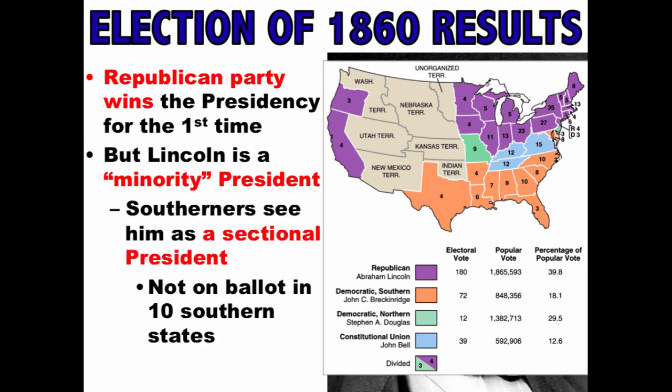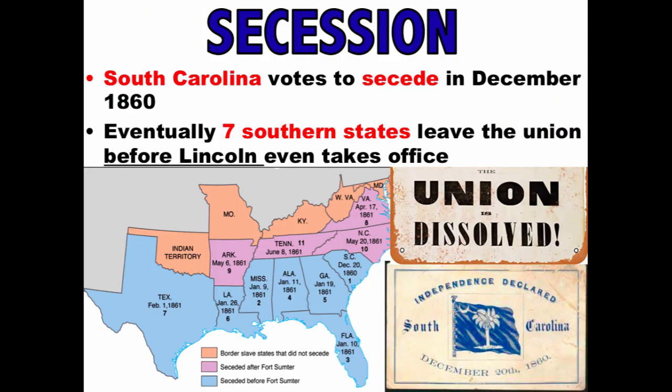Southerners saw Lincoln as a sectional president — he was not even on the ballot in 10 Southern states. As a result of Lincoln's election, secession followed. South Carolina was the first, voting to secede in December of 1860, and eventually seven Southern states left the Union before Lincoln even took office. It is very important to note that Lincoln and the Republican Party did not run on an abolitionist platform. Their platform merely stated no extension of slavery in the territories — the free soil position — but seven Southern states left nonetheless.